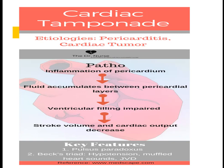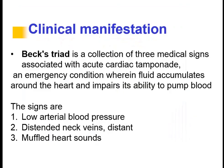Key features of a patient with cardiac tamponade include pulsus paradoxus. The important Beck's triad includes: hypotension, muffled heart sounds, and increased jugular venous pressure (JVP). Beck's triad is a collection of three medical signs associated with acute cardiac tamponade and represents an emergency condition; these signs include low arterial blood pressure, distended neck veins, and muffled heart sounds.